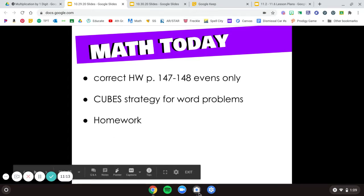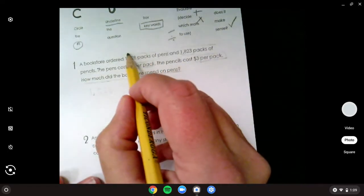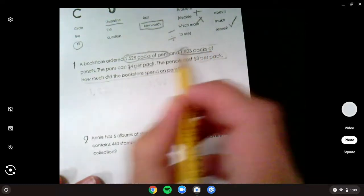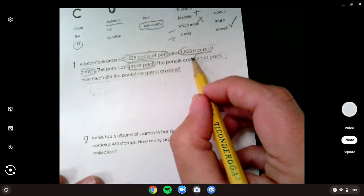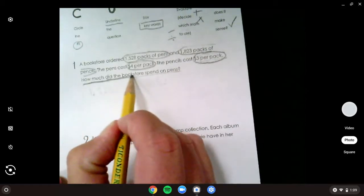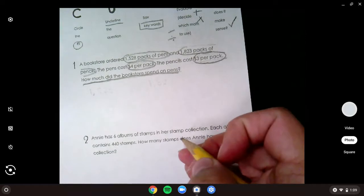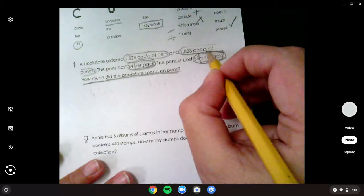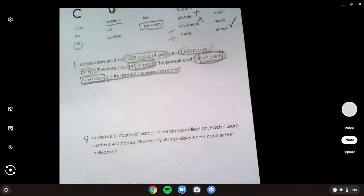All right, let's look over our work. So we should have circled our 1528 packs of pens and 1823 packs of pencils are $4 per pack, $3 per pack, underlined our question, boxed our keyword of per pack. I thought it was how much? Boxing per pack and also that how much to start.